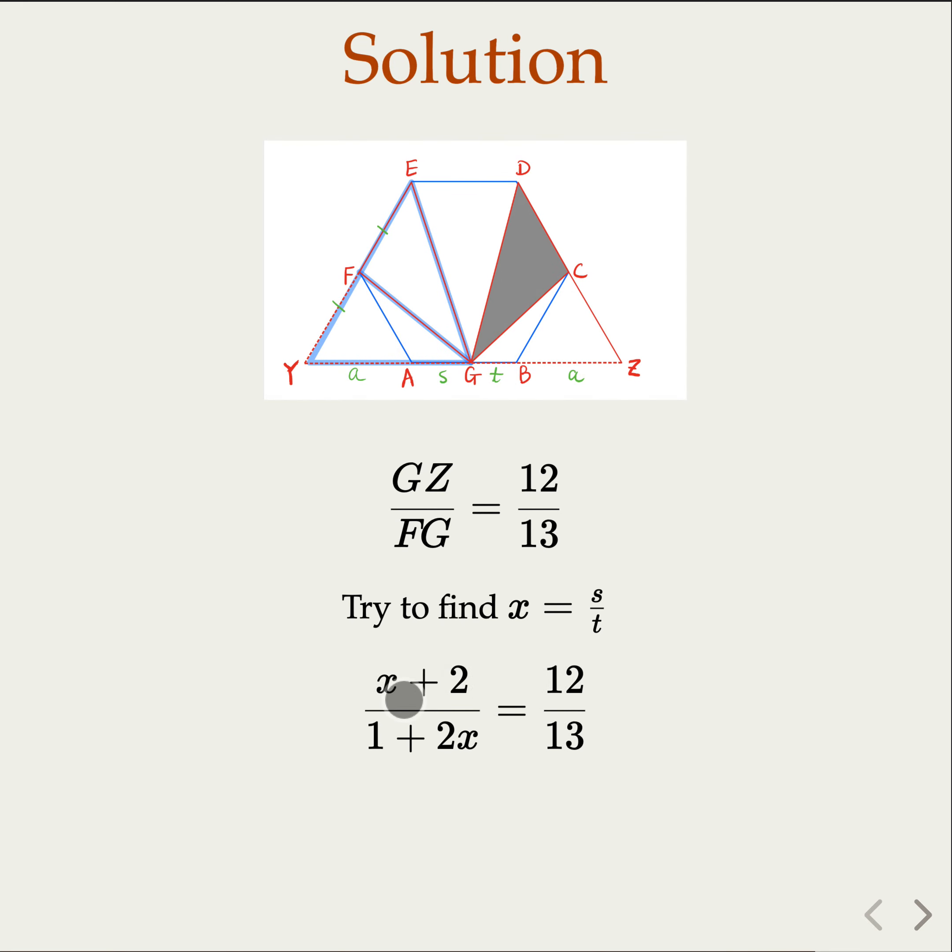In other words, you're going to get X plus 2, 1 plus 2X. This equation can be solved, right? So if you multiply this over there, and then eventually you find that X is equal 14 over 11. That is the ratio of AG over GB.